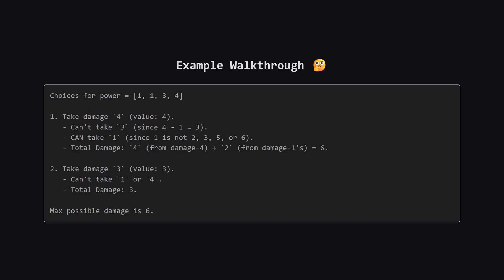Now let's think about our choices. What if we decide to use the damage 4 spell? Its value is 4, so the rule says we can't use spells with damage 2, 3, 5, or 6. This means the damage 3 spell is out. But what about the damage 1 spells? 1 is far enough away from 4, so that's a valid combination. The total damage would be 4 plus the 2 from the damage 1 spells, which gives us 6.